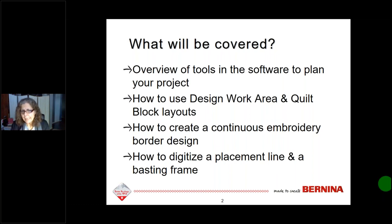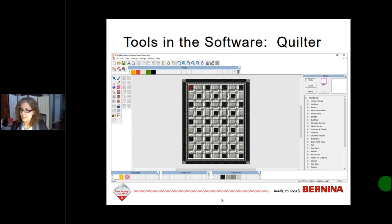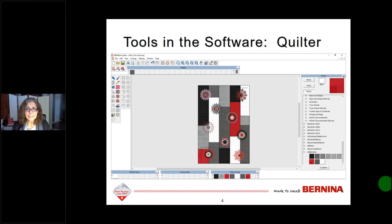We have two different tools there: the design work area and a quilt block layout. I'm going to focus on how to create a continuous embroidery border design and place it on a quilt border. There's also information in one of the handouts on digitizing a placement line and a basting frame — that's a bonus handout called Plan Your Project Placement. I won't be covering that specifically in the webinar.